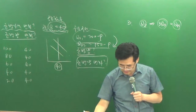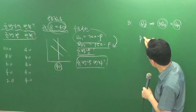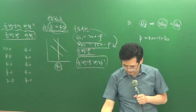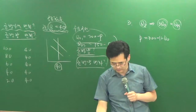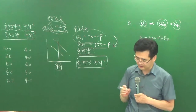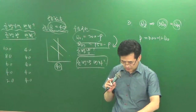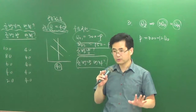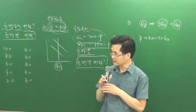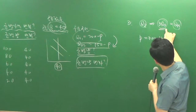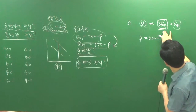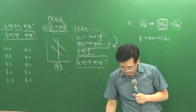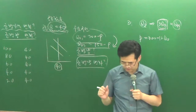어떤 부동산에 대한 시장 수요함수는 P는 300-12QD예요. 여기서 P는 가격이고요. QD는 수요량이며 이 시장의 수요자는 모두 동일한 개별 수요함수를 가져요. 이 시장의 수요자 수가 3배로 된다면 새로운 시장 수요함수는 하면서 단 새로운 시장 수요량은 QM으로 표기한다고 그랬죠.